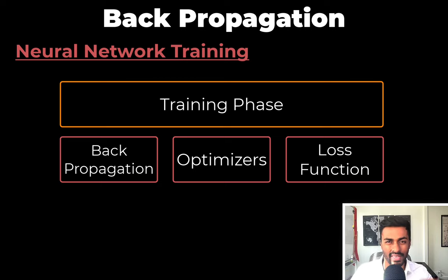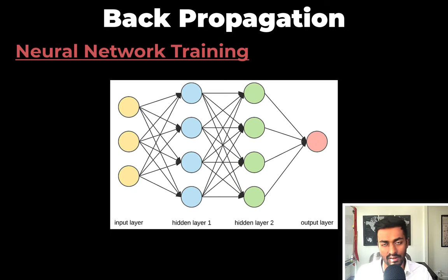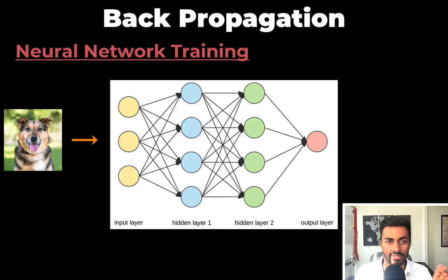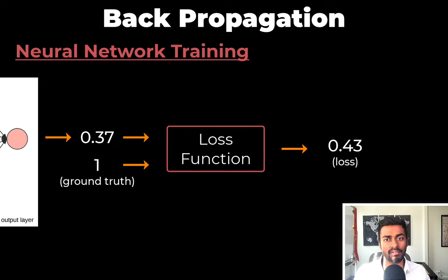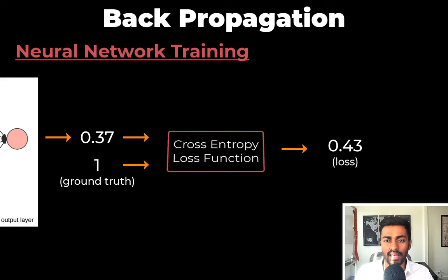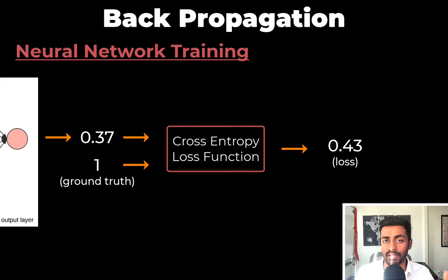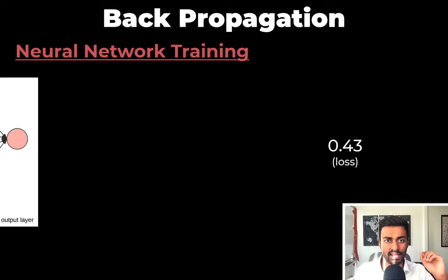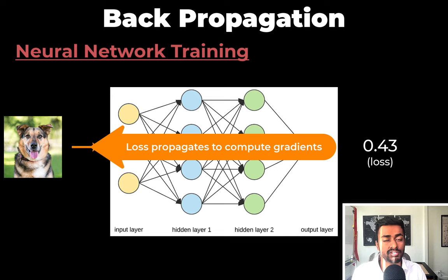Let's illustrate how they interact by going through the training phase for one iteration. The neural network parameters are initialized randomly, so it's effectively dumb. We pass the image to the network, and the network generates a number indicating the probability of it being a dog. This prediction, along with the actual ground truth label, is passed to a loss function to generate some scalar loss value. The loss quantifies the error of the network, and for this classification problem we can use something like a cross-entropy loss.